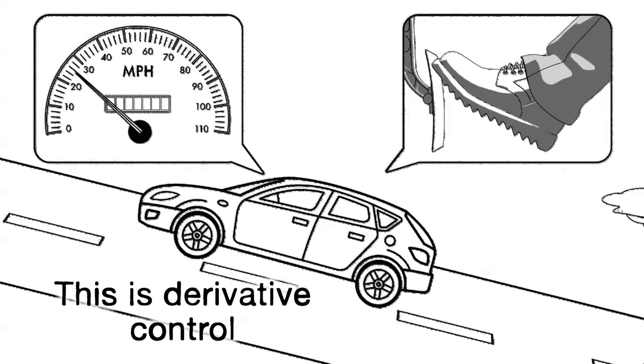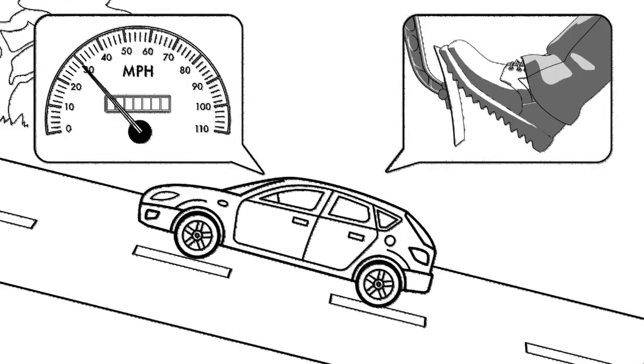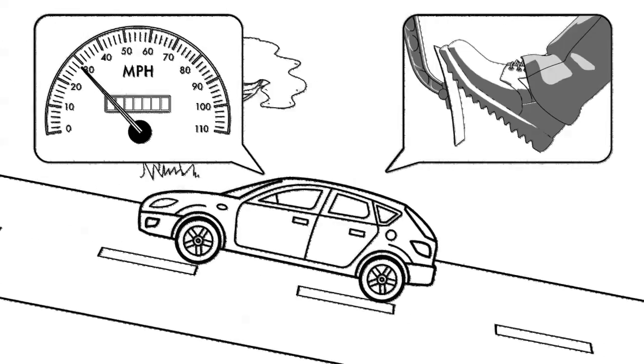So if we have a large difference in target and actual speed we use proportional control to apply a correction. If we suddenly change the speed the derivative control is used.